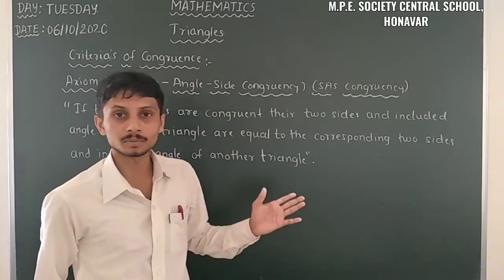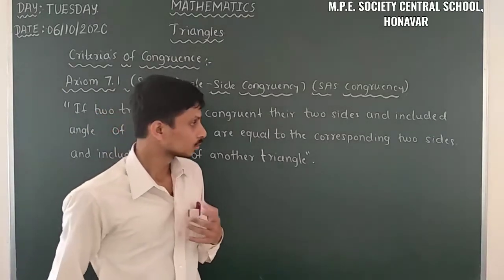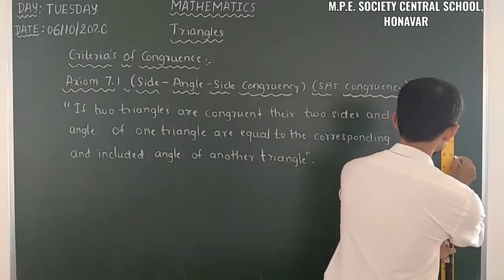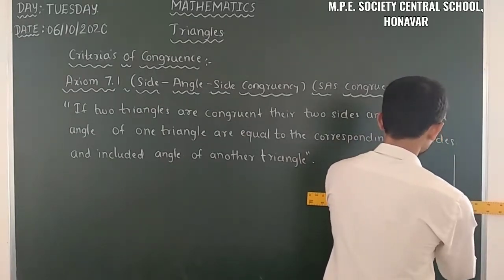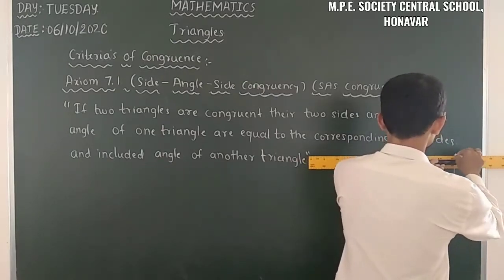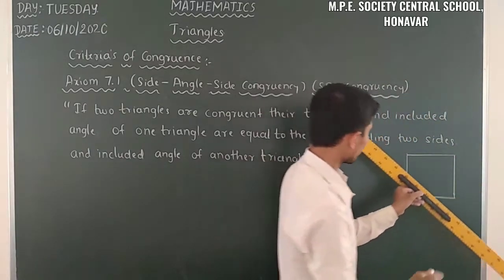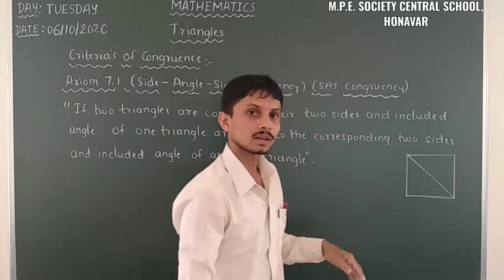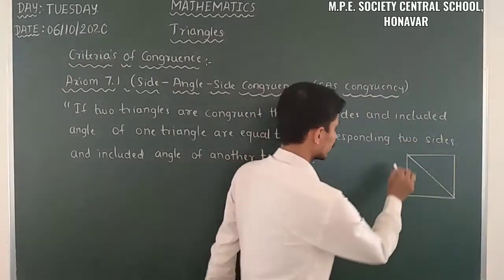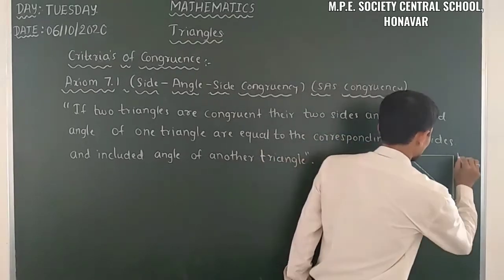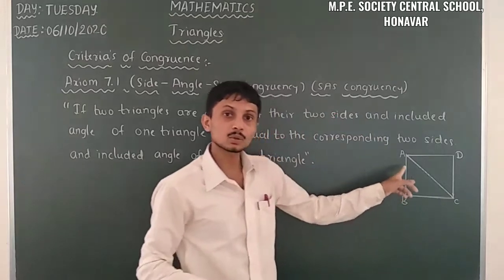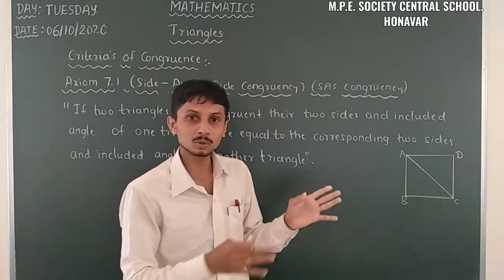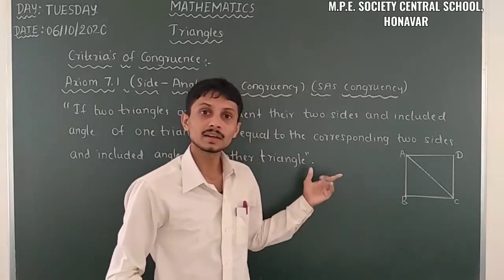Let us take some examples based on SAS congruency. First, I will take a square. All the sides of a square are equal. When we draw a diagonal, the whole square is converted into two triangles — triangle ABC and triangle ADC.